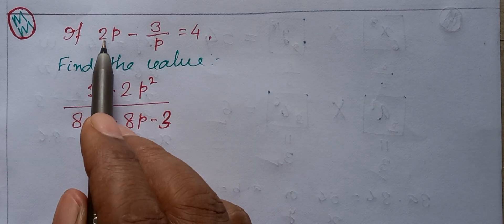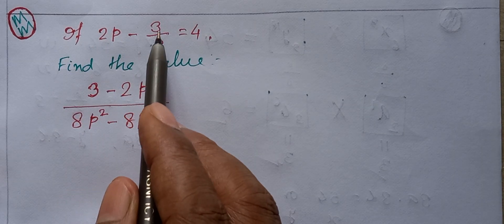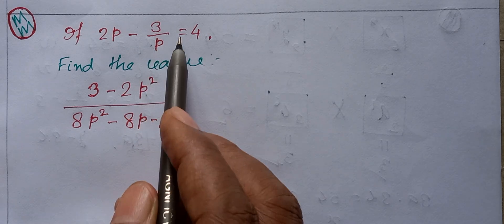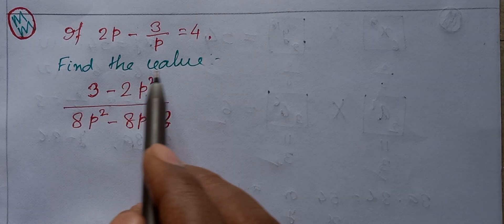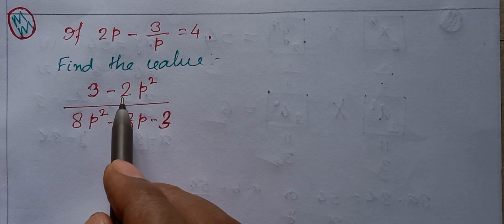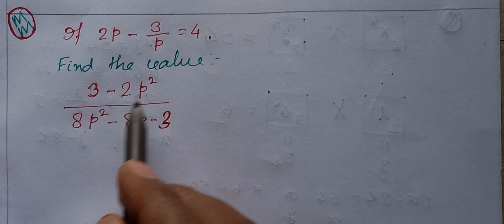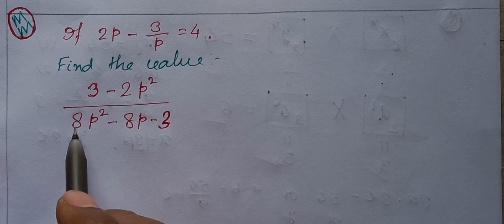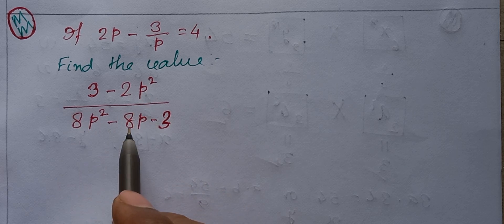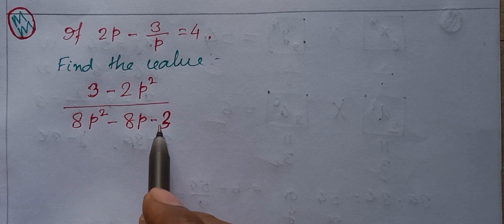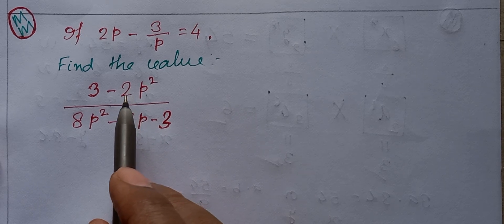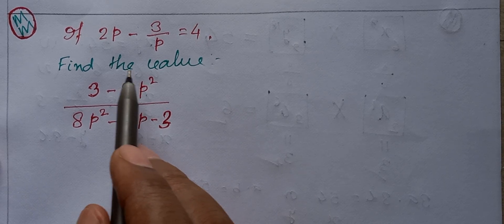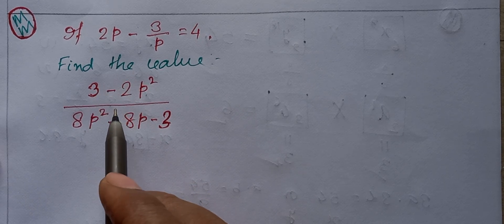If 2p minus 3 by p equals to 4, then find the value of 3 minus 2p square by 8p square minus 8p minus 3. This is a class 8 algebra problem.